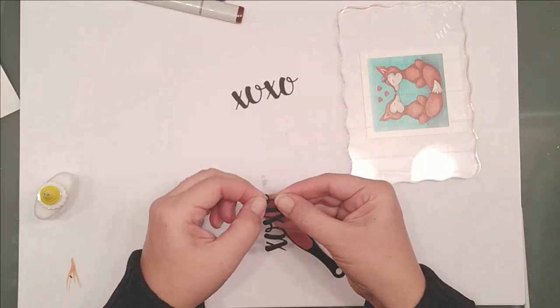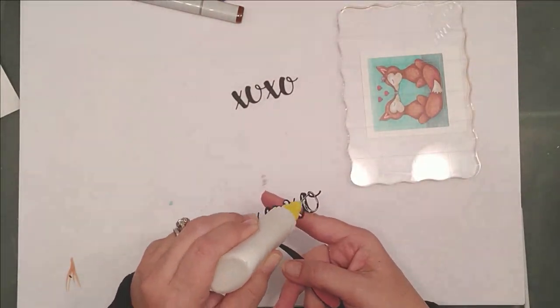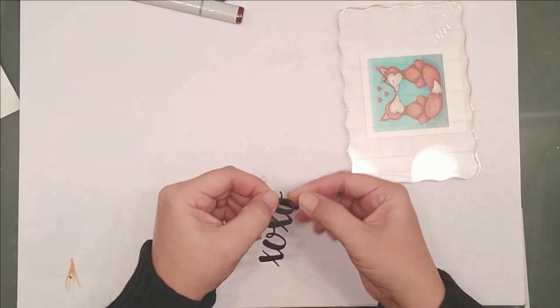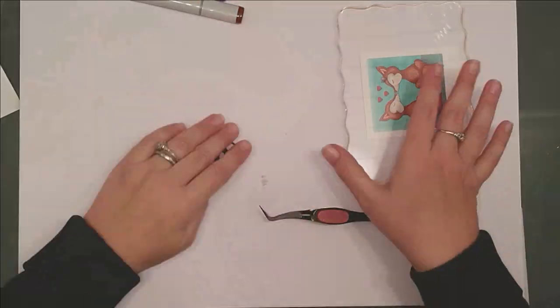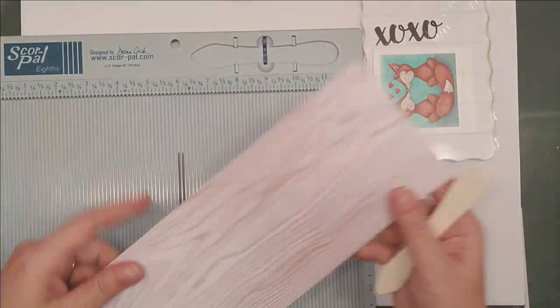For my card base, I'm going to use a light gray woodgrain cardstock that I cut down to 4¼ by 11 inches and I'll score it with my ScorePal and fold it to make a top folding A2 card base.